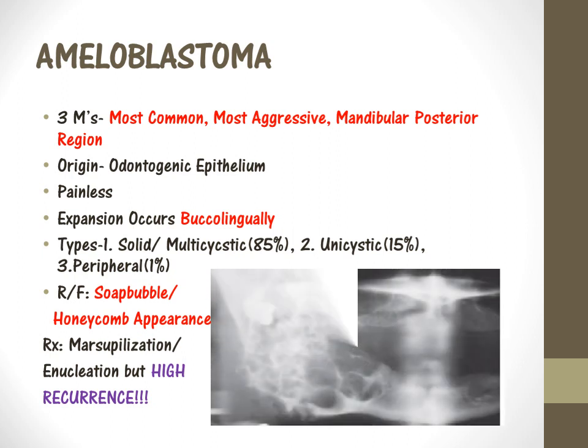Radiographically, ameloblastoma — when it occurs as a multicystic type — shows too many cysts, giving a soap bubble or honeycomb appearance, as seen on the radiograph. Treatment for this tumor would be marsupialization, which means removal of 90% of the tumor without involving major structures like nerves, arteries, or veins, or enucleation, which means complete removal. This tumor has the highest recurrence rate.